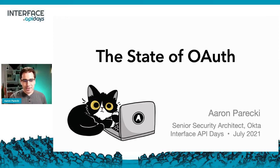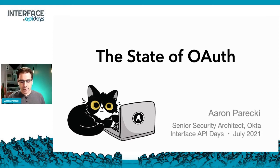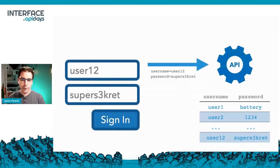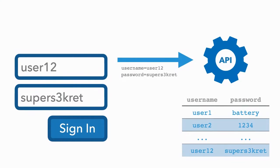Before we get into OAuth itself, I want to set up some of the context around why we actually have OAuth. This really came from the past where we were very used to the idea of password-based authentication. You would enter a username and password into an application, it would send it over to the API, the API would validate the password by looking it up in a database, and then it would return data or you would be logged in.